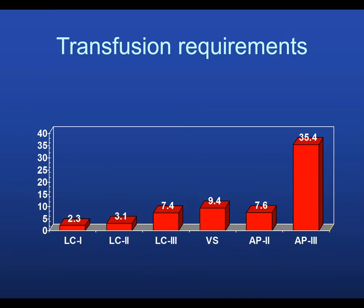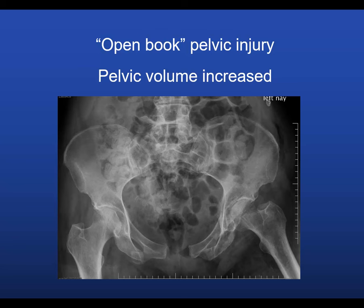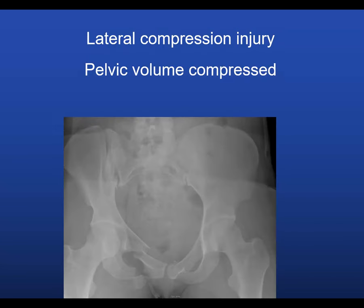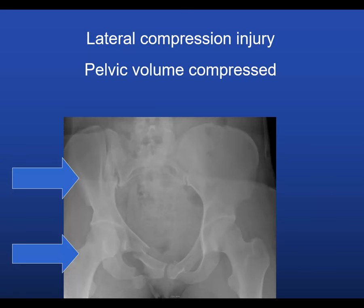From older shock trauma data, the Young-Burgess classification showed that APC3 fractures have tremendous blood loss compared to other fracture types, while lateral compression injuries were associated with more head injuries. In an open-book pelvic fracture, pelvic volume is increased and the goal is to decrease it. In lateral compression fractures, pelvic volume is compressed, with internal rotation of the affected hemipelvis.